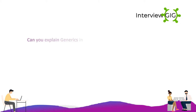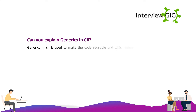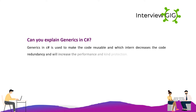What are generics in C#? Generics in C# are used to make code reusable, which in turn reduces code redundancy and increases performance and type safety.